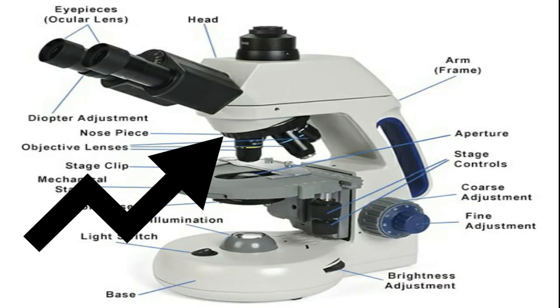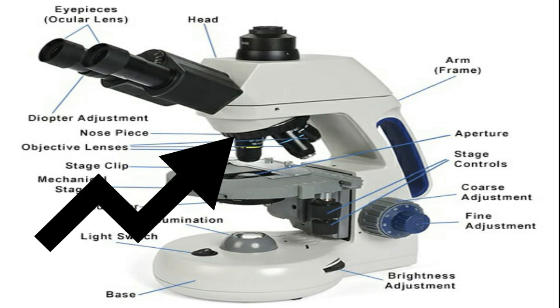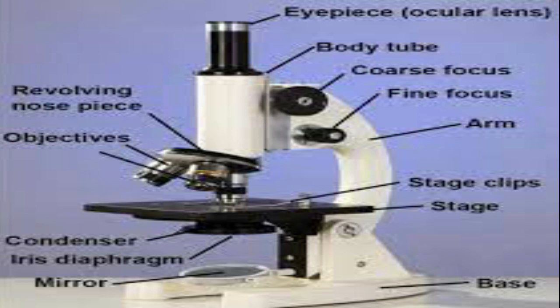The revolving nosepiece or turret holds two or more objective lenses and can be rotated to easily change power. The light system consists basically of an illuminator or mirror and a diaphragm or iris. An illuminator is a steady light source (110 volts) used in place of a mirror. The diaphragm or iris is a rotating disc under the stage with different size holes, used to vary the intensity and size of the cone of light projected upward into the slide.